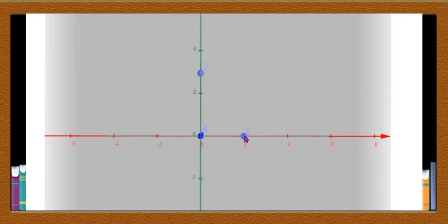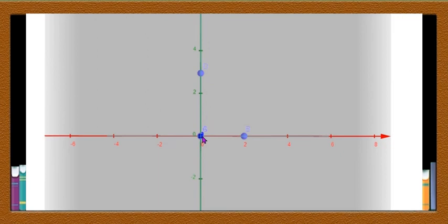For example, a point at (2, 0) or (4, 0) lies on the X axis. The right side of the origin is called positive, and the left side is negative. Similarly, above the origin on the Y axis is positive and below is negative.